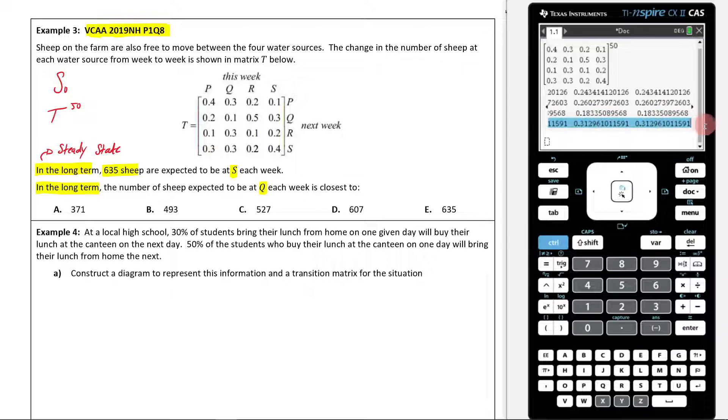What is this telling me? This bottom row here means 30% of the sheep in the long term are at S. This 18, 18% of the sheep will be at R in the long term. 26% of sheep will be at Q in the long term. And 24% of sheep will be in P in the long term. Obviously, if you were to add up all of these, you'd get to 100% of the sheep.